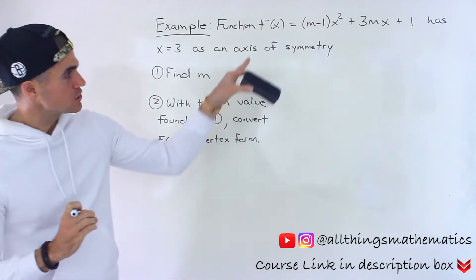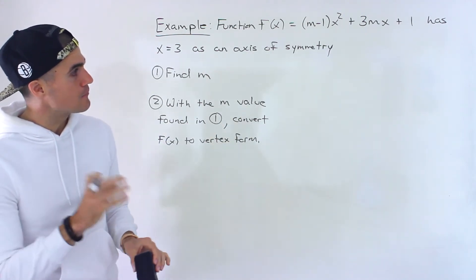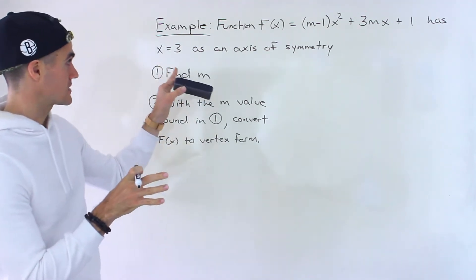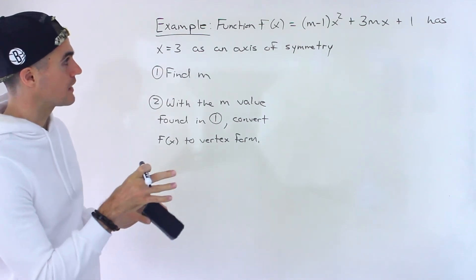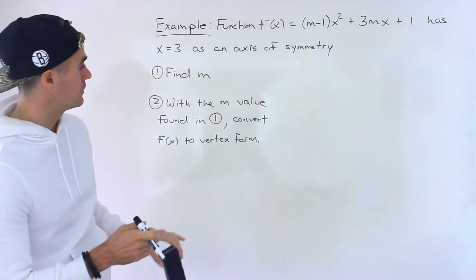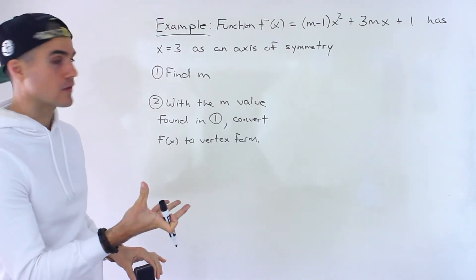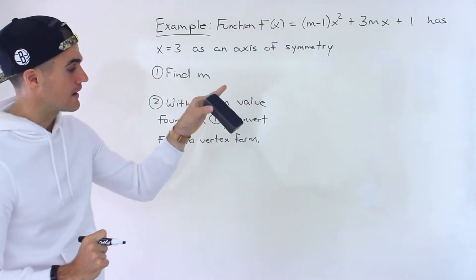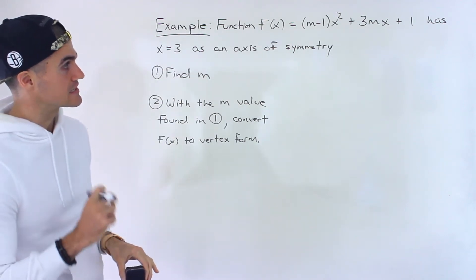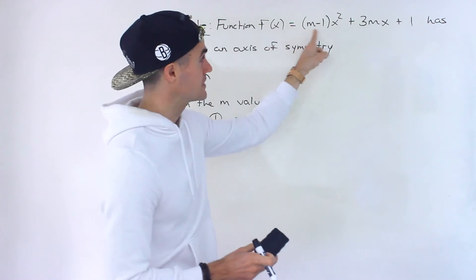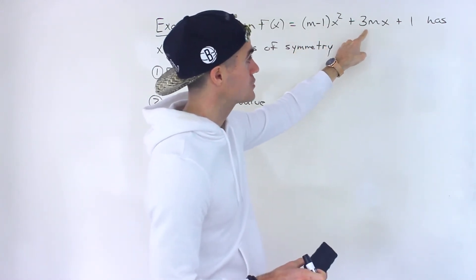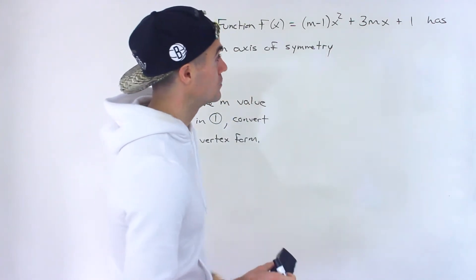So we have this function. It's actually a quadratic: f(x) equals (m-1)x² + 3mx + 1. And that quadratic has an axis of symmetry at x equals 3. So we're given that information, and with that information, we have to find the m value in the quadratic. And then number two, with the m value that we find in number one, we have to take that and then convert it to vertex form. Because notice that that quadratic there is actually in standard form, right? The (m-1) is like the a value, ax² plus bx, so the b value is 3m, plus 1. The c value is 1.